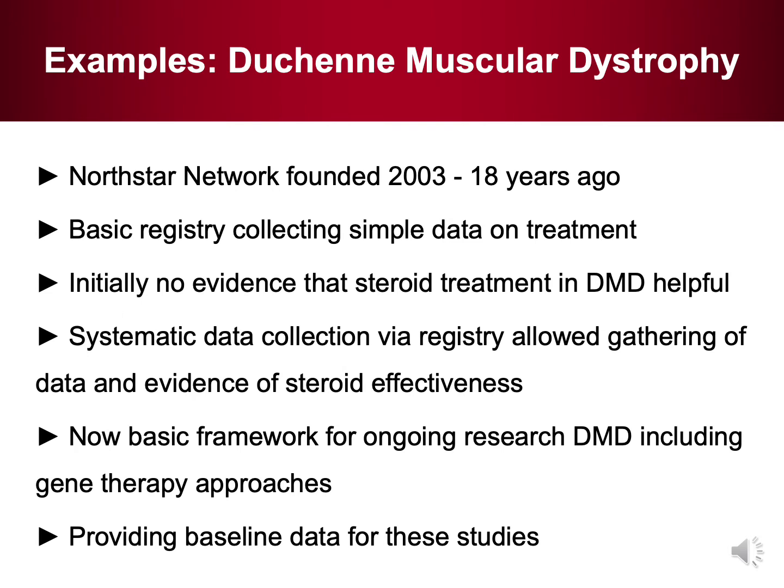This is an example of how patient registries might actually be really successful — the example of Duchenne muscular dystrophy in the United Kingdom. The North Star Network was founded in 2003 as a registry for patients with Duchenne muscular dystrophy, now 18 years ago. Initially, this was established to collect simple data on treatment, because at the time there was no real evidence to show that steroid treatment in Duchenne muscular dystrophy was helpful. The systematic data collection via registry allowed the gathering of data and showed evidence for the first time that steroid treatment in Duchenne muscular dystrophy is really useful. Now, this registry forms the basic framework for ongoing research in Duchenne muscular dystrophy, including new gene therapy approaches, and it really provides baseline data for these ongoing studies.